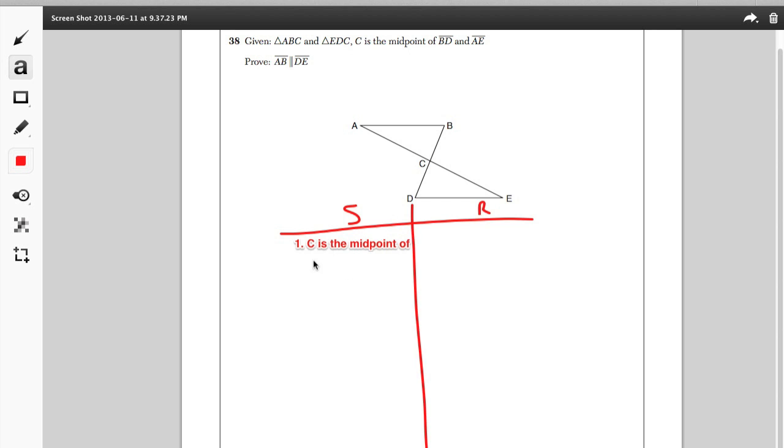So what you have are two triangles lined up and they give you a lot of good information. They give you midpoints and you can clearly have verticals.